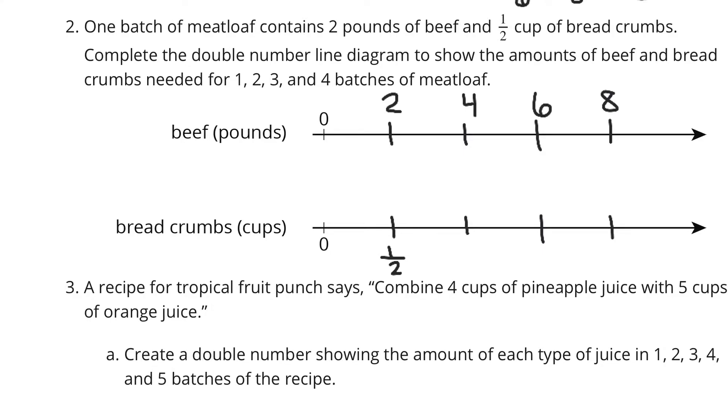On the bottom, we're going up by halves. So 0, 1 half, 1, 1 and 1 half, and lastly 2. And that is completing the double number line to show the amount of beef and breadcrumbs needed for 1, 2, 3, and 4 batches of meatloaf.